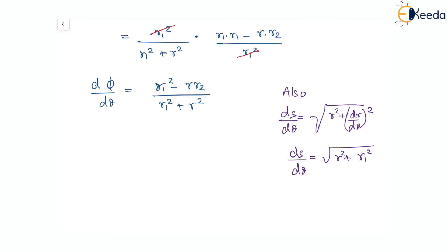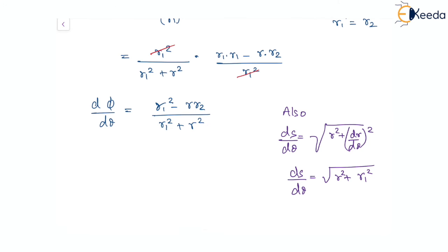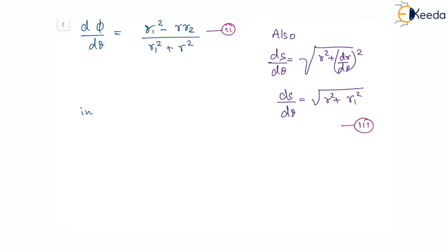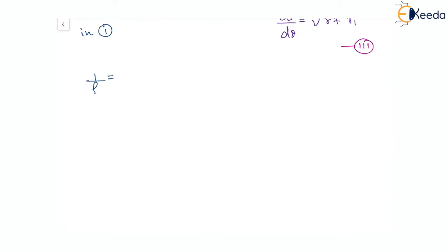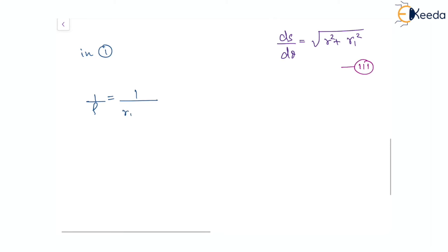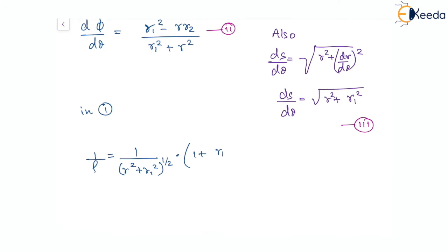Going back to equation 1: 1/ρ = (dθ/ds)·(1 + dφ/dθ). Substituting dθ/ds = 1/√(r² + r₁²) from equation 3, and substituting dφ/dθ = (r₁² - r·r₂)/(r₁² + r²) from equation 2, we get 1/ρ = (1/√(r² + r₁²))·(1 + (r₁² - r·r₂)/(r₁² + r²)).